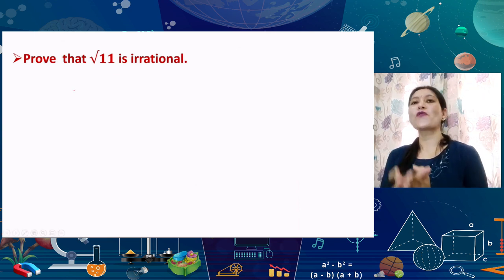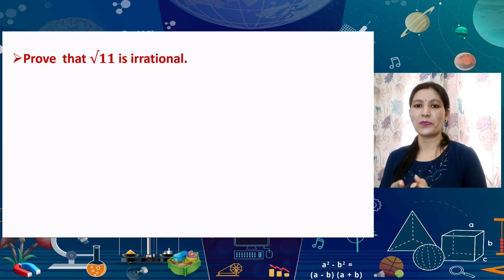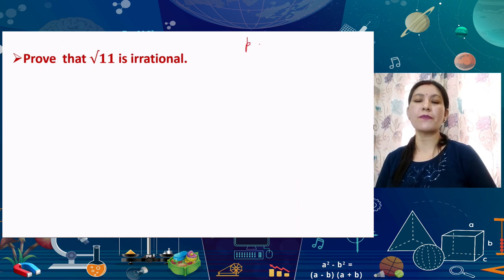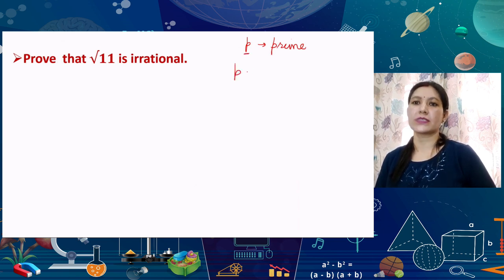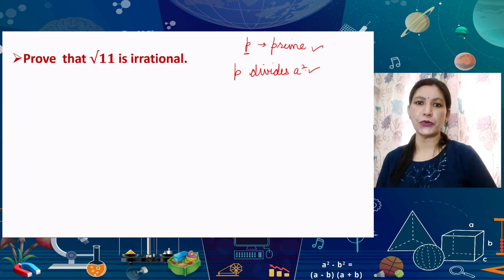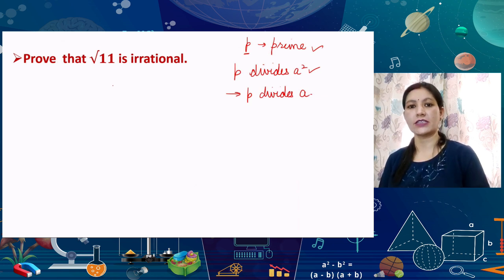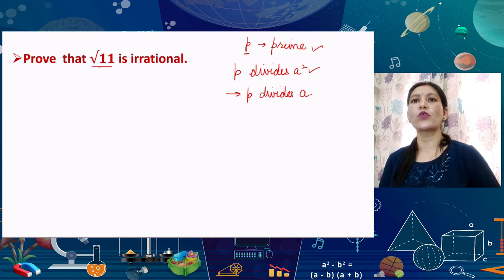The next question: prove that √11 is irrational. Before starting, let us recall from our previous session that if P is any prime number and P divides A², then P also divides A. We have used the same result to prove √2 is irrational in an earlier session. Today we prove √11 is irrational. The steps are the same whether it is √2, √3, √5, √7, √11, or √13.